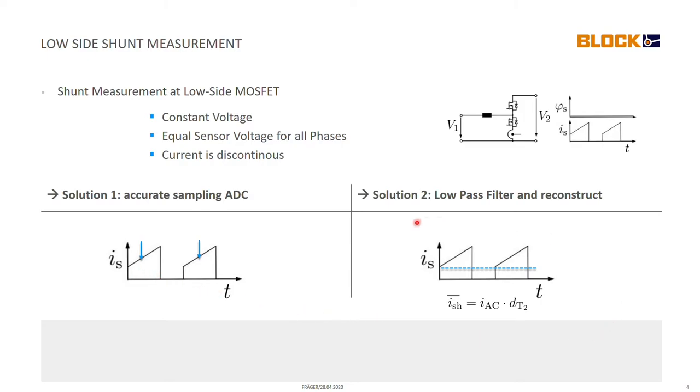And this is why I came up with a new solution. It's to just low pass filter the measured signal. So we still have the discontinuous signal at the sensor but then we do a low pass filtering of this signal which is shown here with the blue dashed line. Then we come up with the average sensor voltage which is just the input current IAC times the duty ratio of transistor T2.